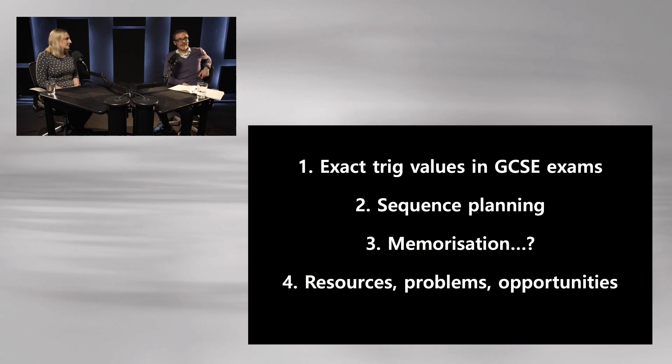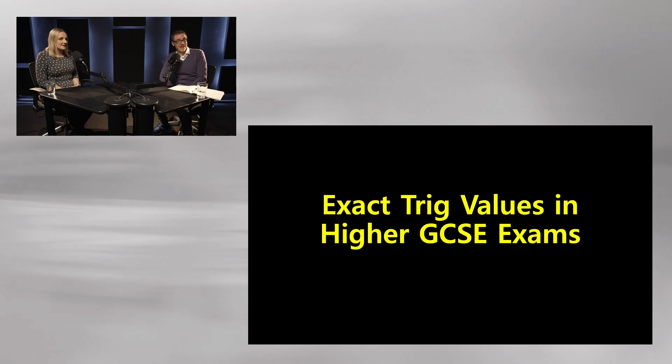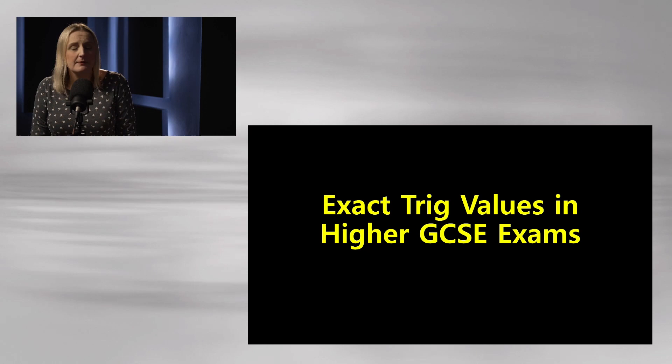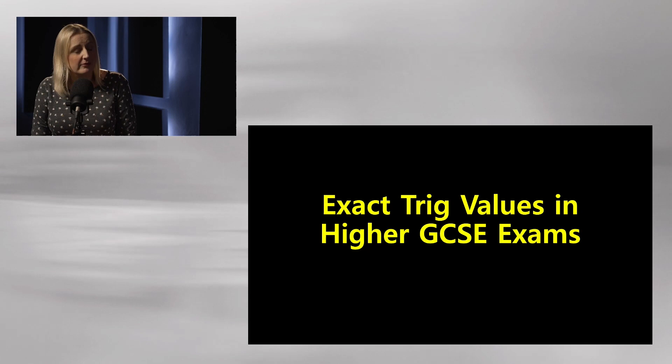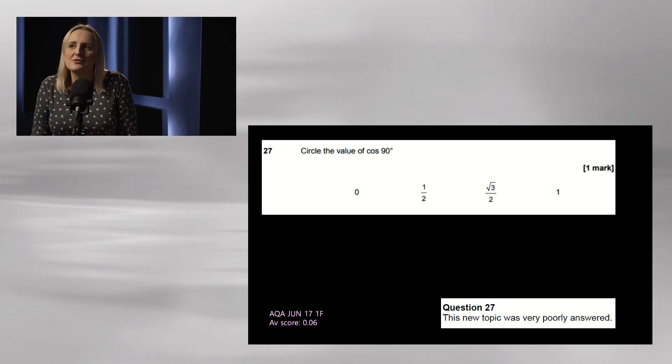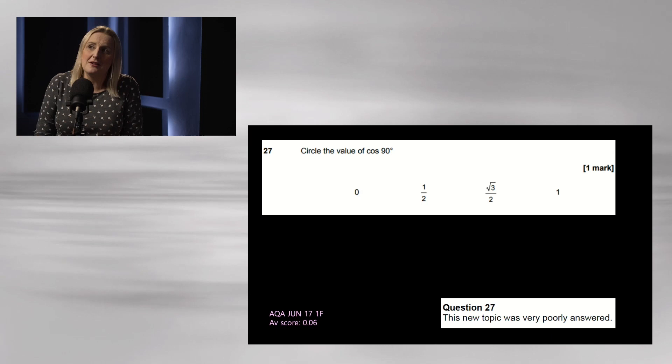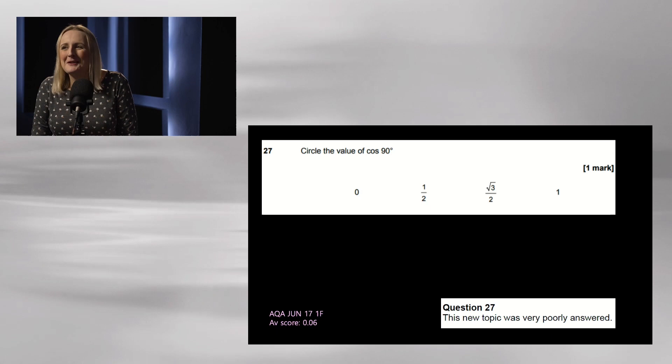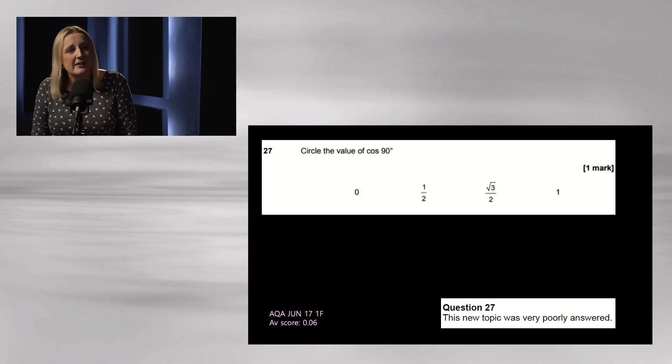Let's look at higher tier. I'll show one foundation question but mainly focus on higher tier AQA questions. There's such a variety — exact trig values comes up in two main different forms. Here's a foundation question, right at the end of the foundation paper. The facility was 0.06 — randomly it would have been 0.25 — so people were guessing very badly. This was the very first new GCSE exam, and no one knew what was going on.